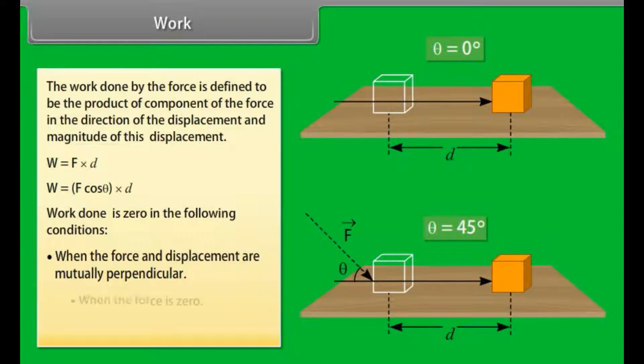Work done is zero in the following conditions: when the force and displacement are mutually perpendicular, when the force is zero, when the displacement is zero.